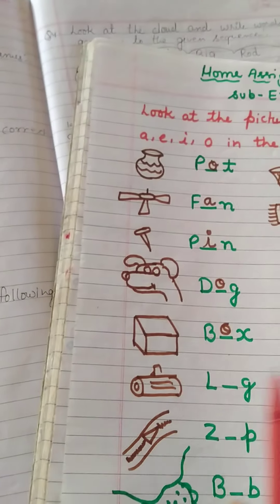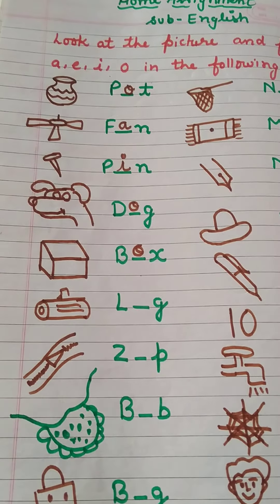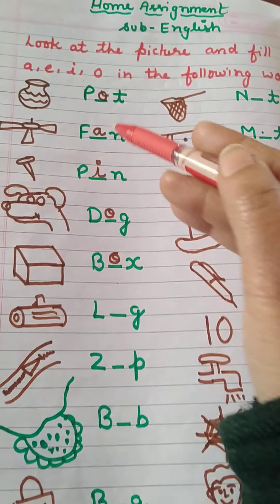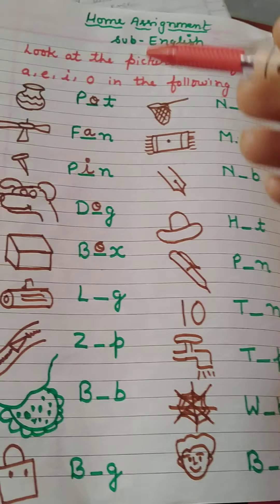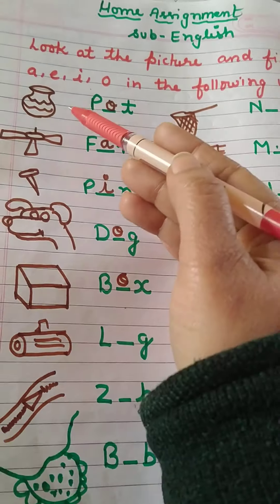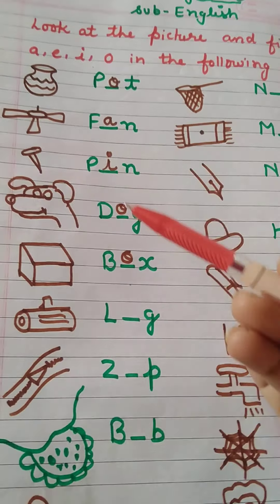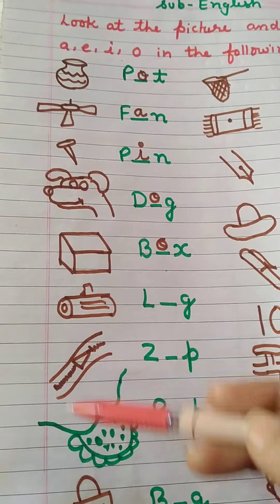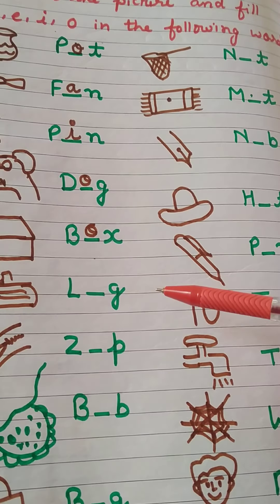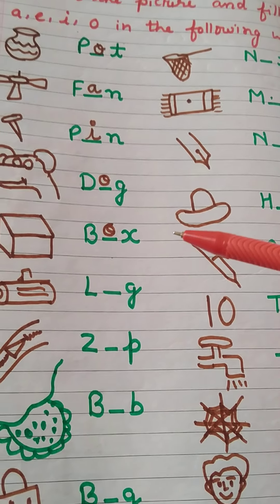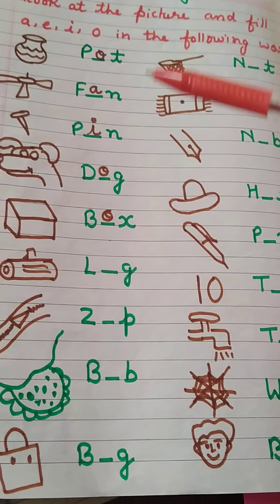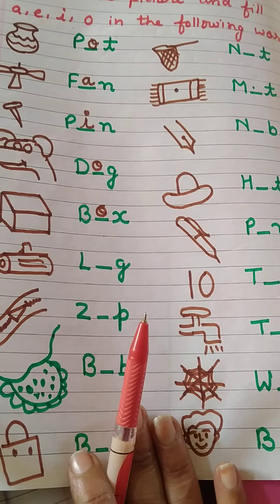Now start our next work — this is your English work. What you have to do: you have to fill up the middle letter. यह middle letter आपको fill up करना है — a, e, i, o. ठीक है? Vowel sound words — आपको यहाँ पर fill up करना है। You have to look at the picture and fill the vowel sound word: a, e, i, or o। जहाँ पर जो sound word आपको दिखेगा, picture के according, आपको वो fill करना है।